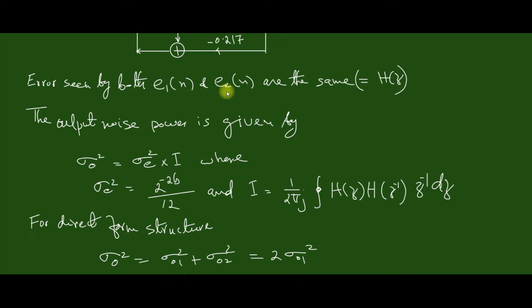So the error seen by both e1 of n and e2 of n are the same, which is equal to H of z itself. Now the output noise power is given by the expression sigma u square into I, where I equal to this one.